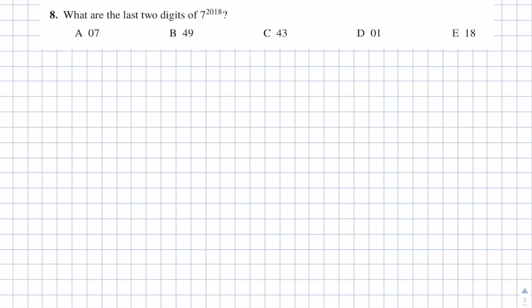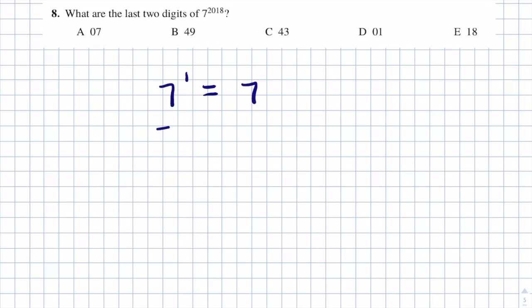Question 8: what are the last two digits of 7 to the power of 2018? Answers: A is 07; B is 49; C is 43; D is 01; and E is 18. Rather than computing 7 to the power 2018 directly, I'll first look at the pattern of powers of 7. 7 to the power 1 is 7. 7 squared is 49. 7 cubed is 49 times 7: 9 times 7 is 63, and 7 times 40 is 280, giving 343.